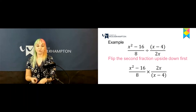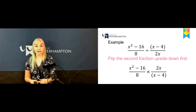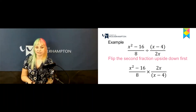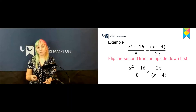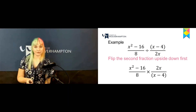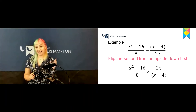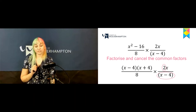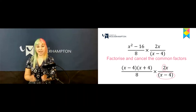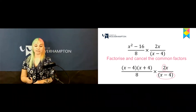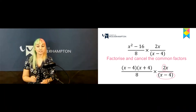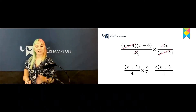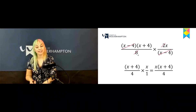Now let's look at an example for division. We have x squared minus 16 over 8, divided by (x minus 4) over 2x. First we flip the second fraction upside down and change the symbol from division to multiplication. We then factorize the fraction and cancel out the common factors — 2 and (x minus 4) — which leaves us with x(x+4) over 4.